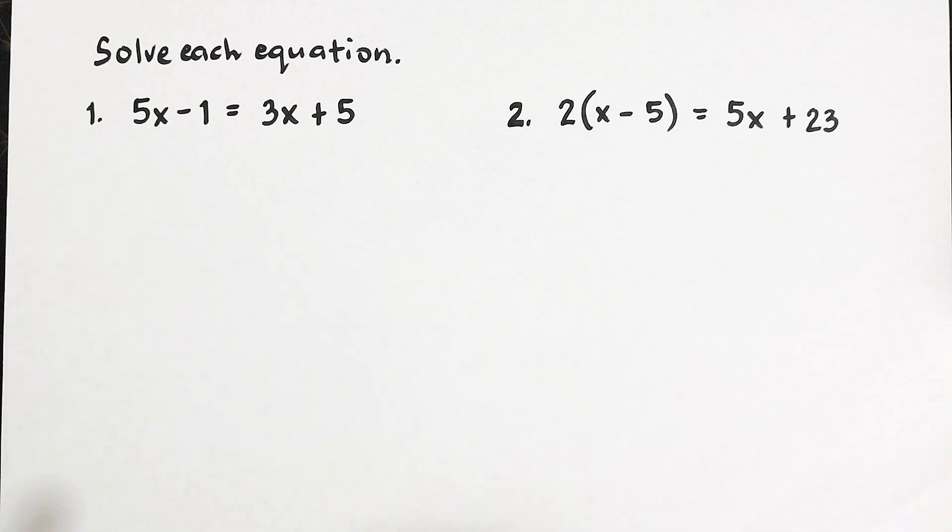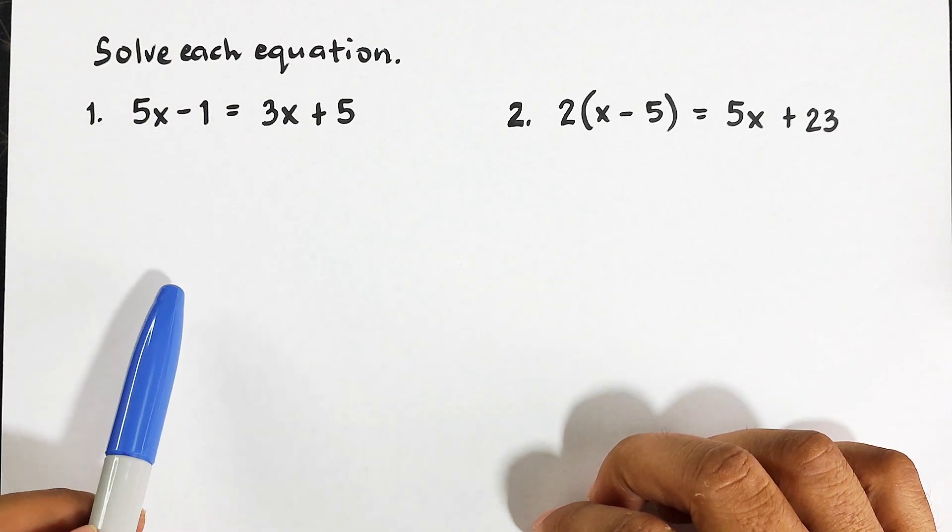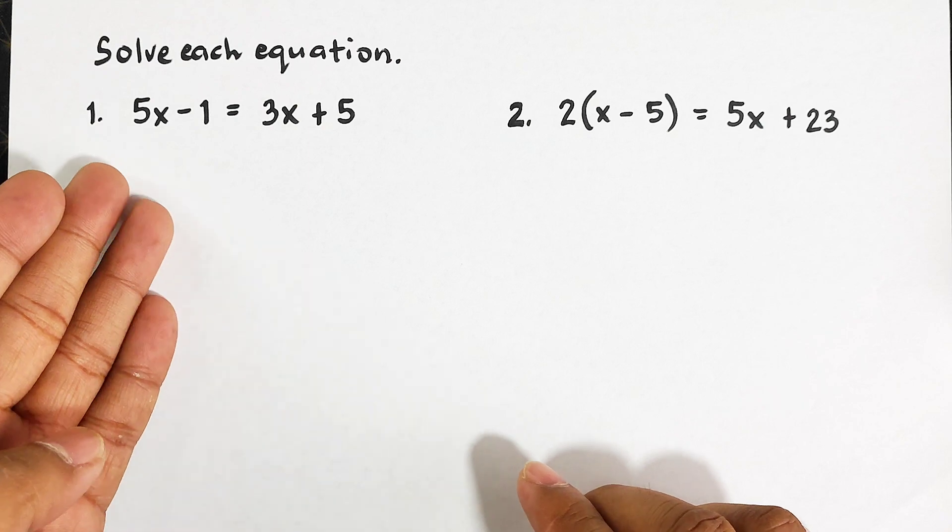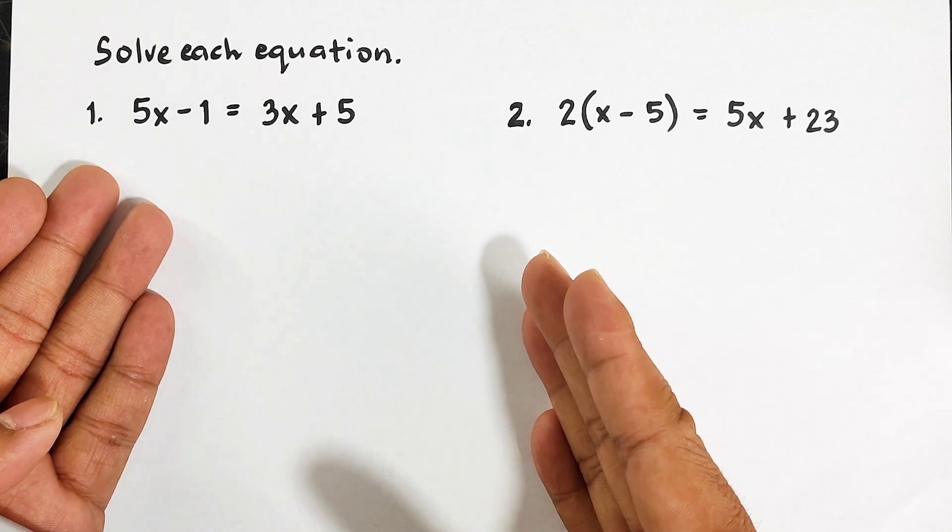We will solve each equation. Number one, we are given 5x - 1 = 3x + 5. Now as you can see in this kind of equation, there's a variable on the left side of the equation and there's a variable on the right side of the equation. The question is: